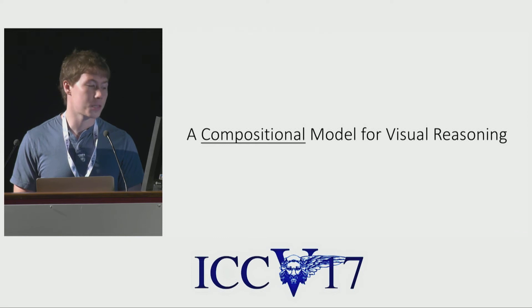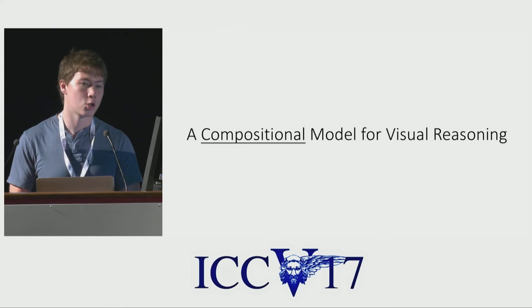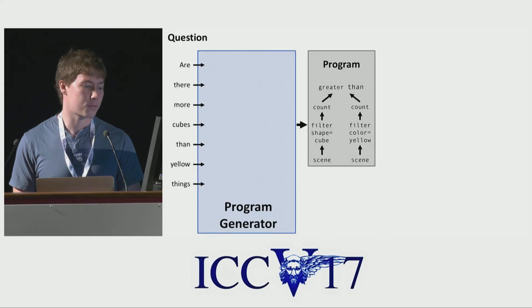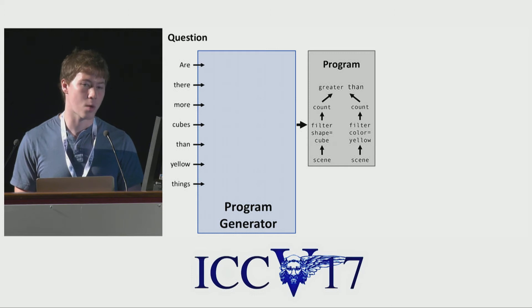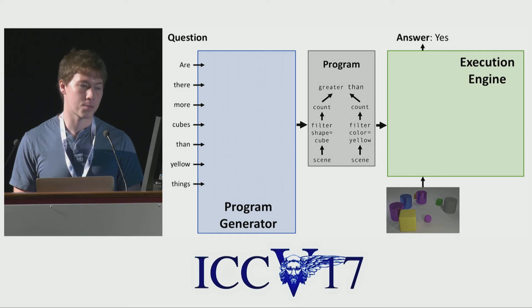To this end, in this paper, we propose a compositional model for visual reasoning, which bakes the idea of compositionality and basic skills directly into the heart of the model. Concretely, our model consists of two components. The first is a program generator, which reads the text of the question and produces a program that will be used to answer the question. The second half is an execution engine, which inputs the program and the image and executes the program on the image in order to arrive at the answer.